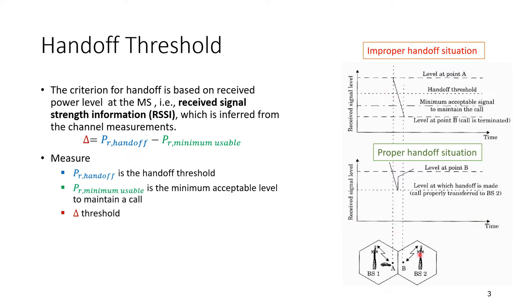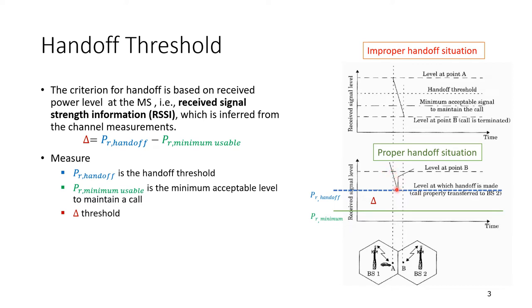P_r_handoff is the handoff threshold; P_r_minimum is the minimum usable level to maintain a call; and delta is the threshold between them. The time axis shows the user's mobile phone moving from point A to point B. As the user travels, the base station measures the received signal level (RSSI), which decays with distance. In the improper scenario, the signal goes below the minimum acceptable level before handoff occurs, causing the call to be dropped.